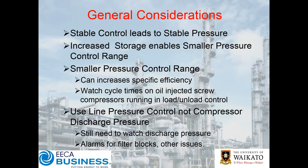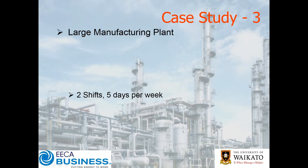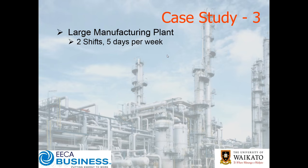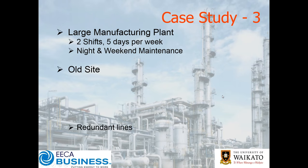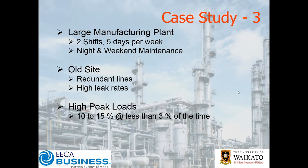Just to finish off, I want to share an example of a plant. It was a large site, two shifts, five days a week — so 48% of the year. However, they then had night and weekend maintenance. It was an older site with plenty of leaks and redundant lines, high peak loads, and the last 10% to 15% of capacity was used less than 3% of the time. Total available savings was over 25%.